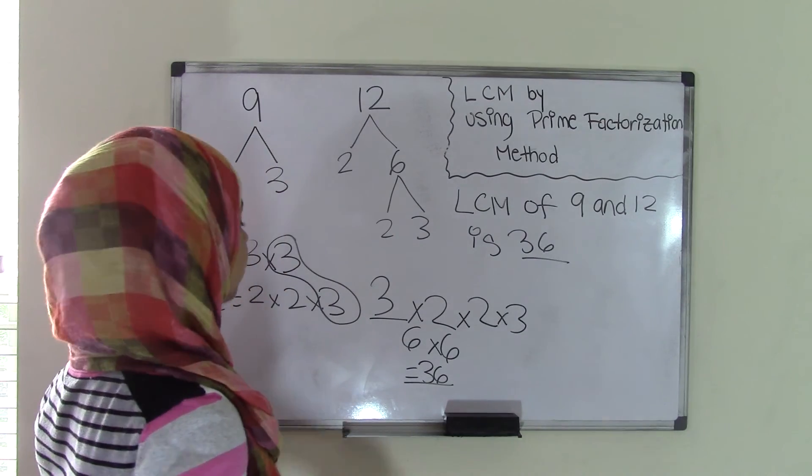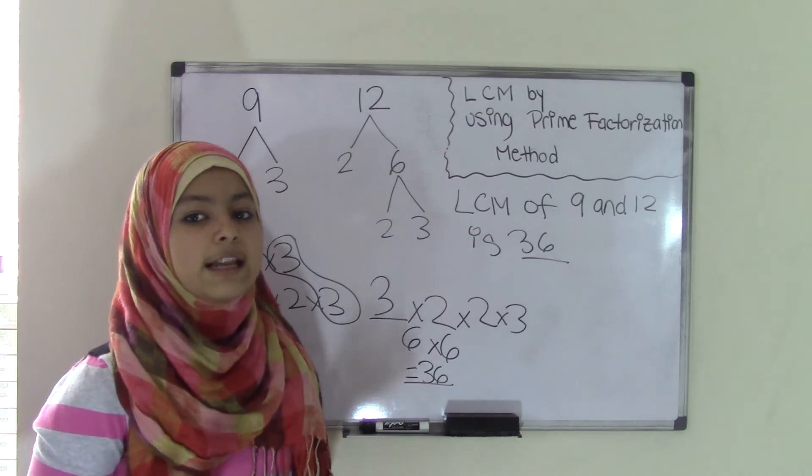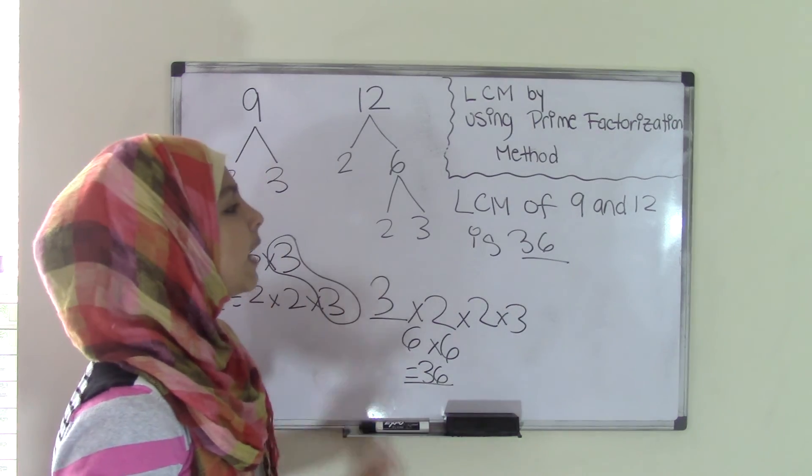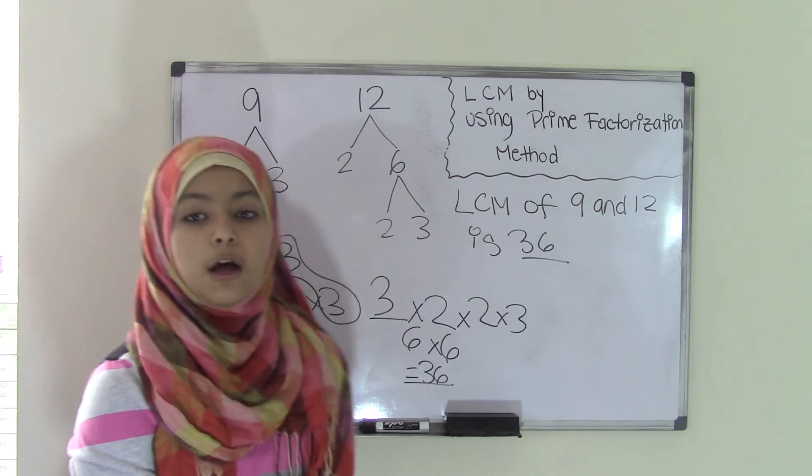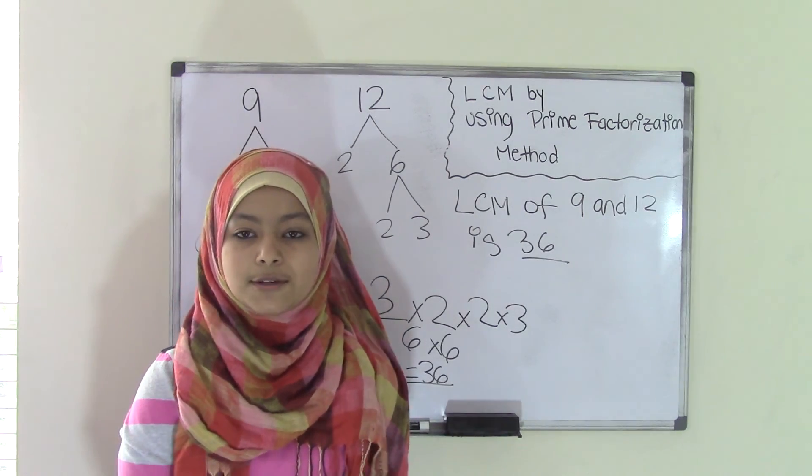That means your LCM of 9 and 12 is 36. That's it for LCM by using prime factorization method. I hope you guys understood this topic. This is once again a very easy topic as long as you take it step by step. Check out our blog for extra practice problems on this topic and further coming topics. We'll see you guys next time, bye.